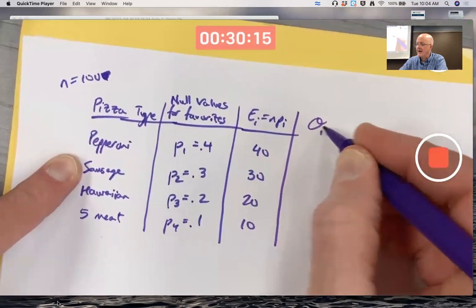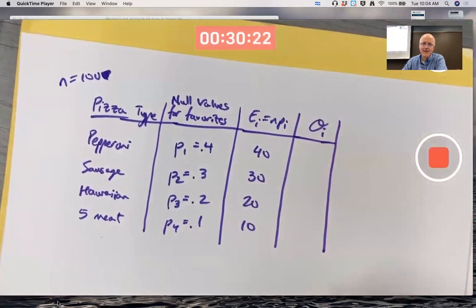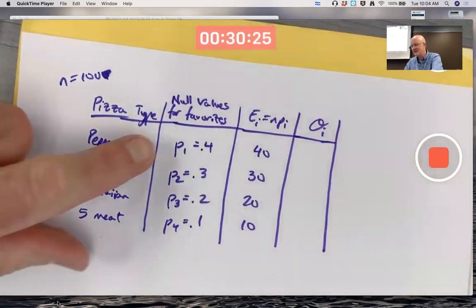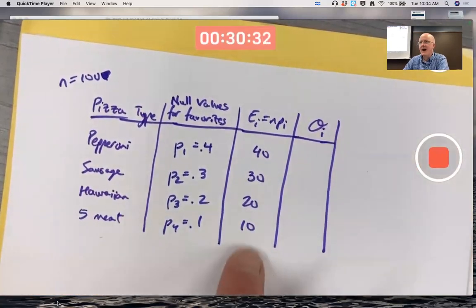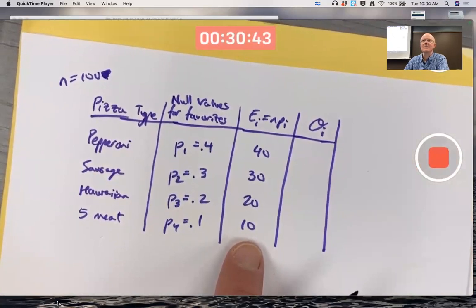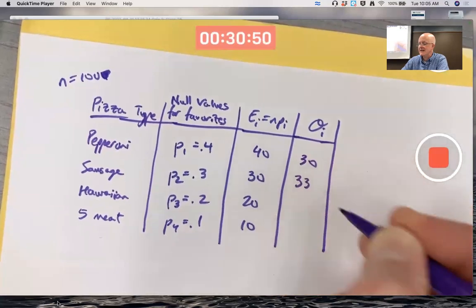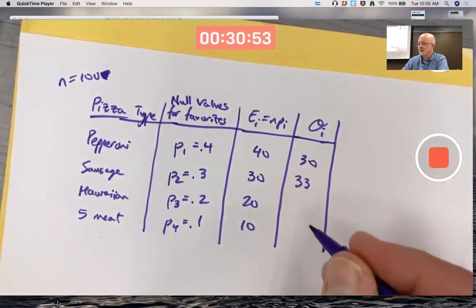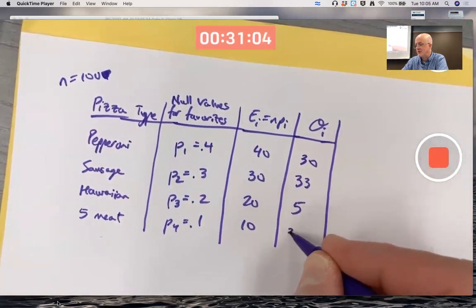What are the observed values? Call them Oi, make your O cursive so you don't think it's a zero. Because of randomness, even if these are the true proportions, true population proportions, you're not going to get exactly these numbers. Let's try to make them far enough away from the expected values that hopefully we end up rejecting the null. Let's make this one be 30, say this one be 33, this one to please my son let's make it way down at 5, and then these do have to add up to 100, so that's going to leave 32 for that one.